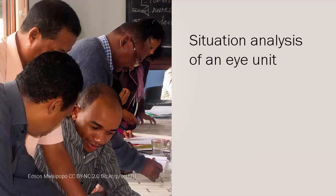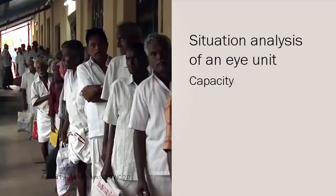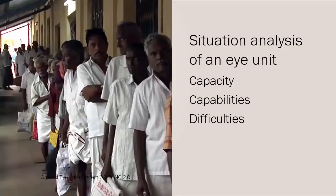Situation analysis can be used to describe the performance of an eye unit in terms of capacity, numbers of patients treated, capabilities, training for staff and available equipment, difficulties which affect output and outcome, environment, the supports and threats to the unit, and possibilities—these are the opportunities for the unit.